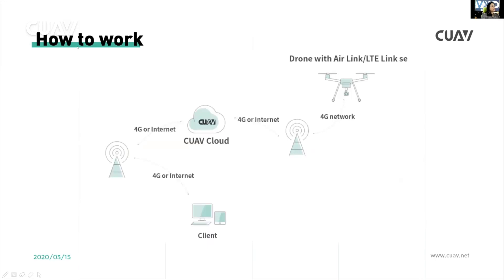Let me introduce how CUAV CLOUD works. You install the LTE-Ring or LTE-Ring SE on the drone. It sends data and video via 4G network to the CUAV CLOUD. The data and video can then be accessed in Mission Planner. Customers can get the data and video at any time by logging into their account, and can see details and live video from the CUAV CLOUD client.